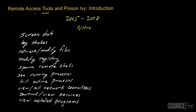Poison Ivy functions as a remote access tool — really more of a toolkit that leads to a remote access tool — which means that once it's installed onto a system, the attacker essentially gets carte blanche access to do whatever he or she desires. That includes capabilities like taking screenshots of the victim system, recording keystrokes, retrieving and modifying files, modifying the Windows registry, spawning remote shells, seeing and killing active processes, killing network connections, controlling and viewing services, and seeing what's installed on the system.